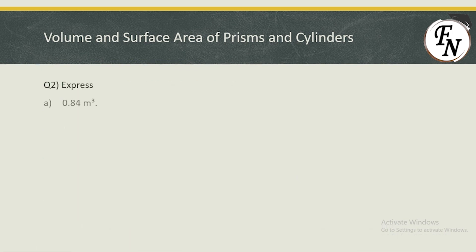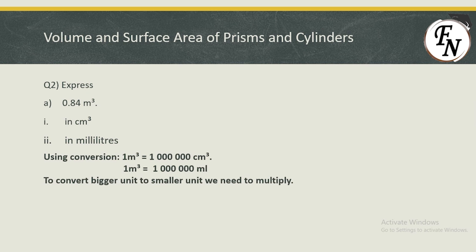Question number 2: express 0.84 meter cube in centimeter cube first, and then in milliliters. We are converting a single number into two different units. The two conversion units needed are: 1 meter cube equals 1,000,000 centimeter cube, and 1 centimeter cube equals 1 milliliter. Since centimeter cube and milliliters are equal, the answer from part one can directly be used for part two, just with a change of unit.